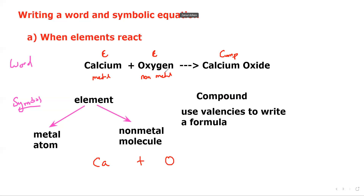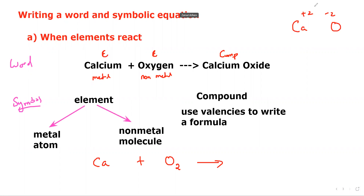Oxygen's symbol is O, but because oxygen is a non-metal, we write it as a molecule: O₂. Calcium oxide is a compound, so we use valencies to write its formula. Calcium is +2 and oxygen is −2 as symbols; we simplify the valency and cross multiply. The formula for calcium oxide is CaO. Some students mistakenly write O₂ when writing a compound formula — that is wrong. The correct formula is CaO.